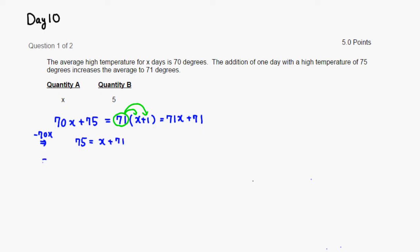Then we can just subtract 71 from both sides. So 75 minus 71 is 4, and X is going to be left alone. So X equals 4.